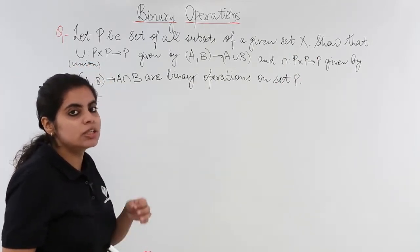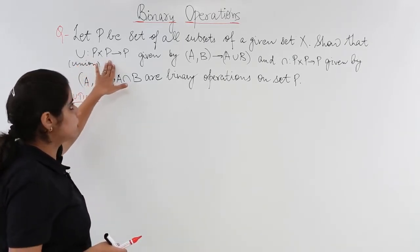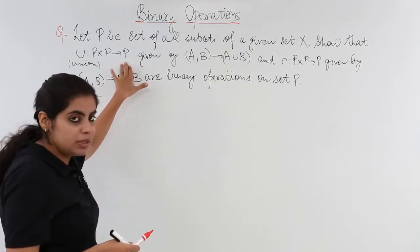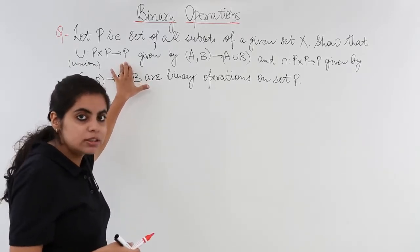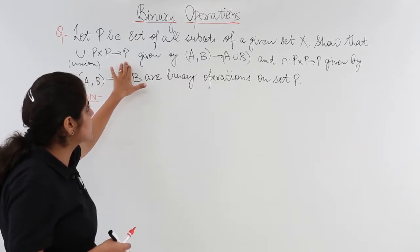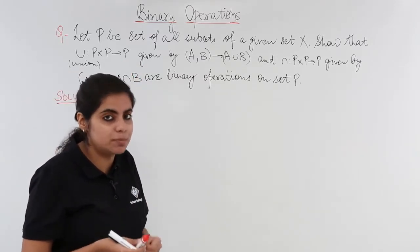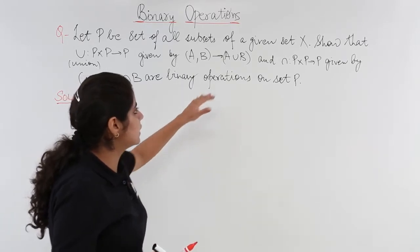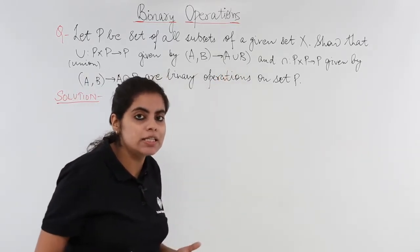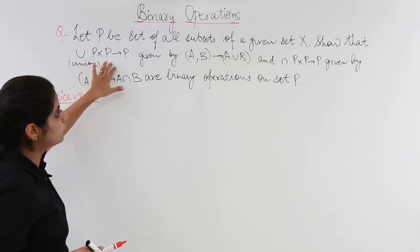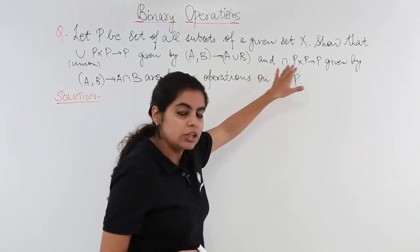Union and intersection are the two operations. P cross P gives me a codomain as P. That means there is a Cartesian product given, and it shows clearly that P is the power set because it is the set of all subsets. Again there are definitions given regarding intersection operation and union operation. Here we have union, here we have intersection.